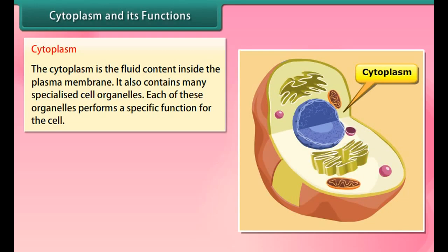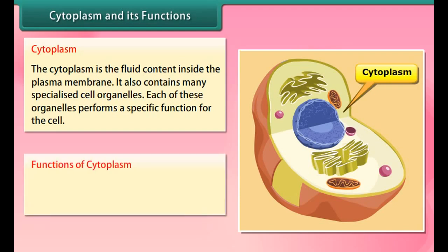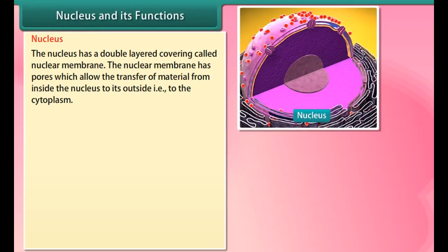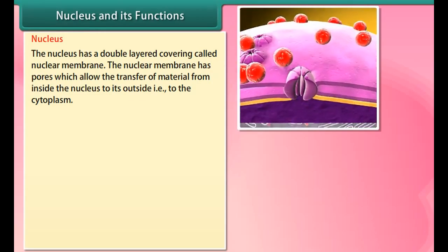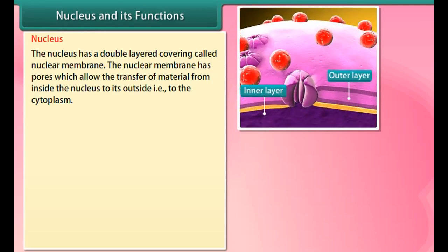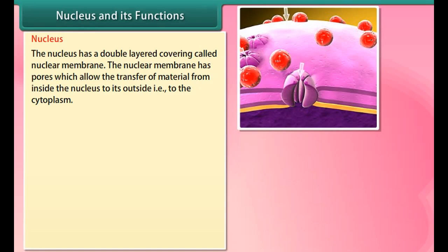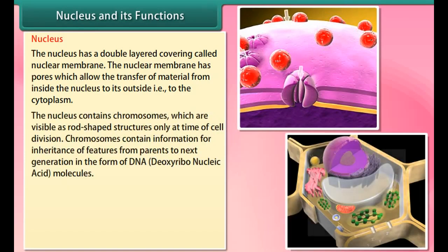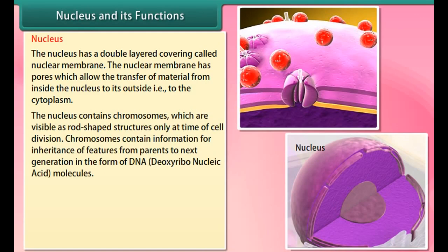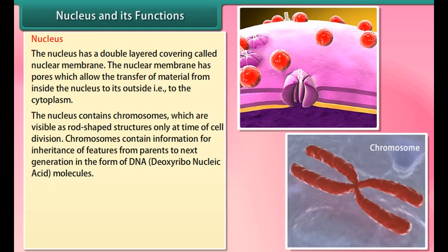Plant cells have another rigid outer covering called the cell wall that lies outside the plasma membrane. The plant cell wall is mainly composed of cellulose, which is a complex substance that provides structural strength to plants. The cell wall provides rigidity and strength to the cell and also permits the cells of plants, fungi, and bacteria to withstand very dilute hypotonic external media without bursting, by building up pressure against it.